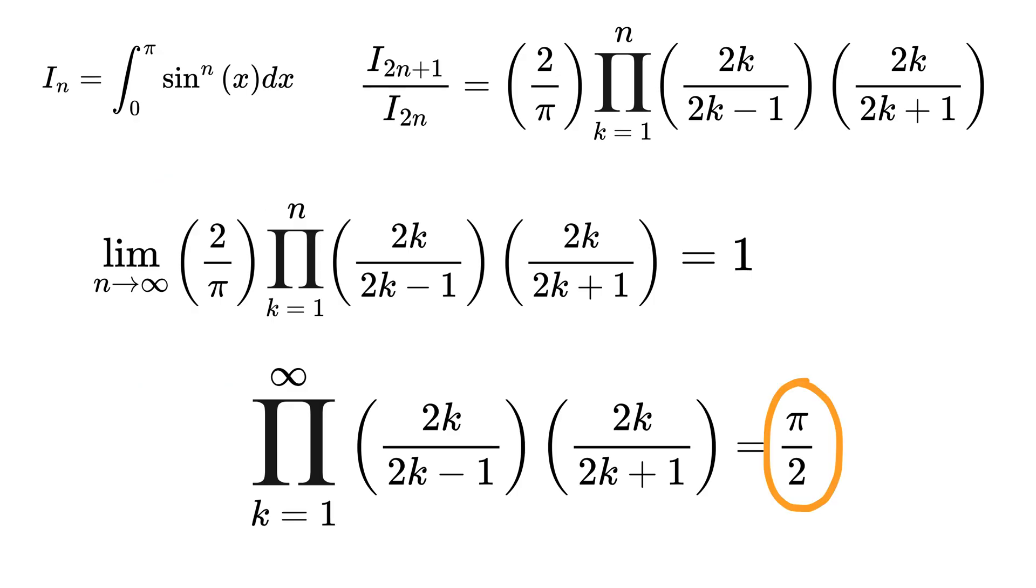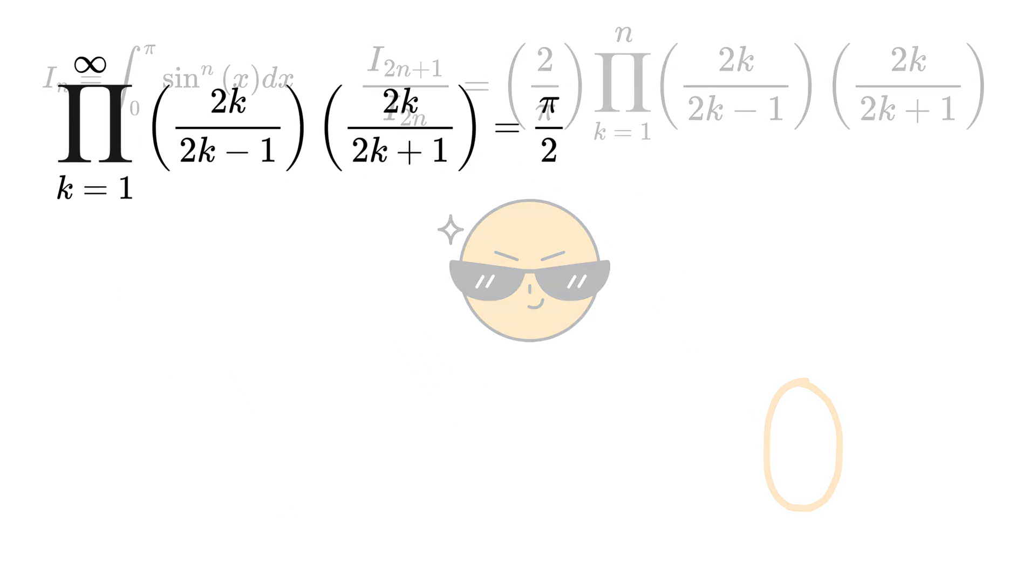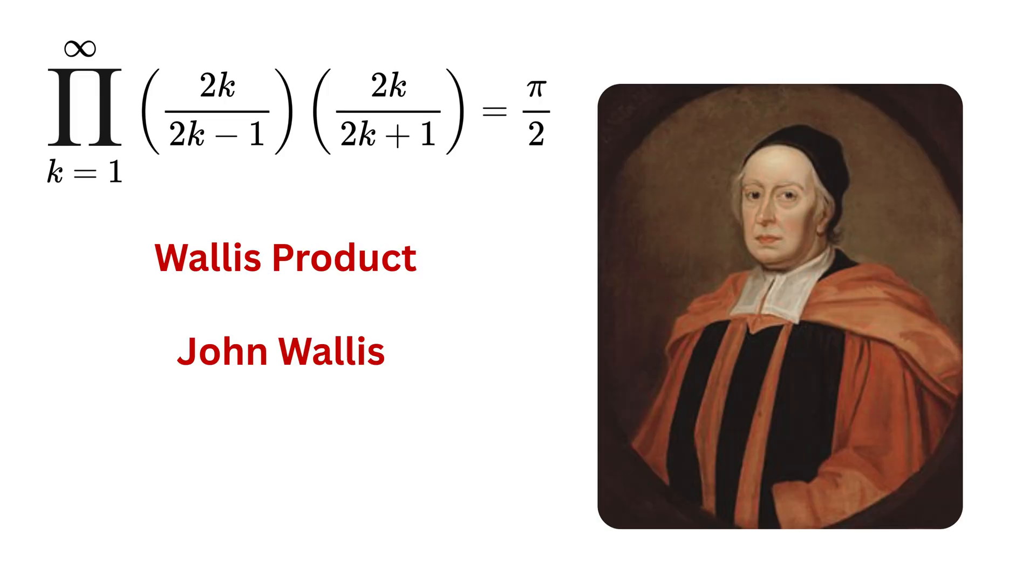That was super duper cool, wasn't it? By the way, this product is known as the Wallis product, which is named after the English mathematician John Wallis. He discovered it in the 17th century, and it became one of the earliest infinite product formulas ever linked directly to pi.